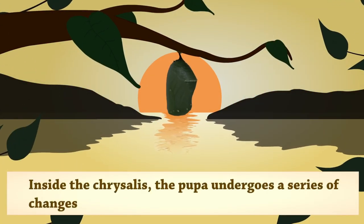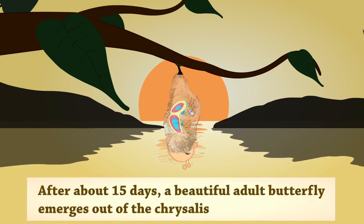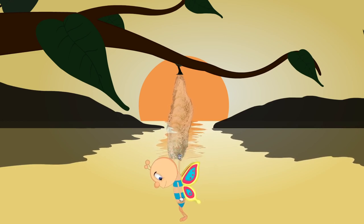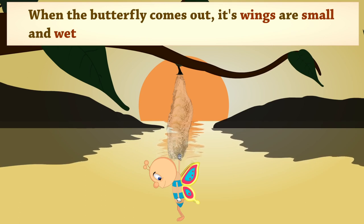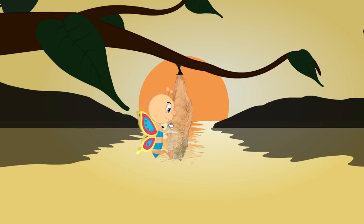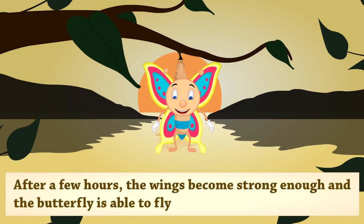Inside the chrysalis, the pupa undergoes a series of changes. After about 15 days, a beautiful adult butterfly emerges out of the chrysalis. When the butterfly comes out, its wings are small and wet. The butterfly pumps fluids into its wings to make them strong and to expand. After a few hours, the wings become strong enough and the butterfly is able to fly.